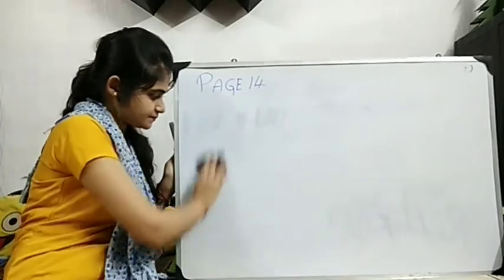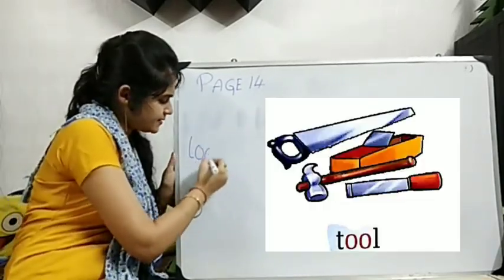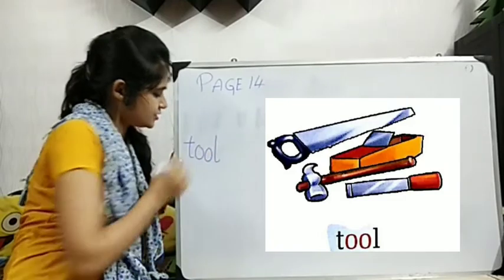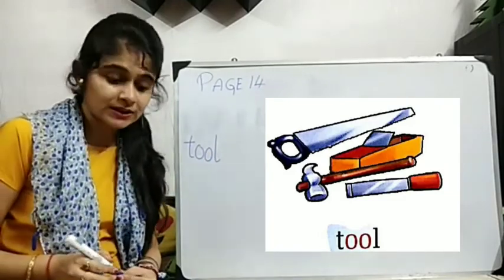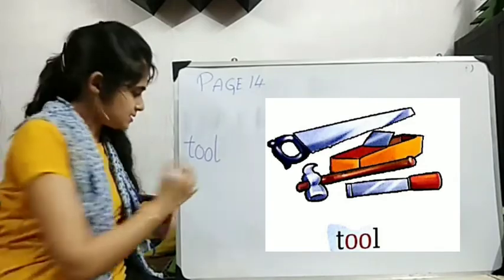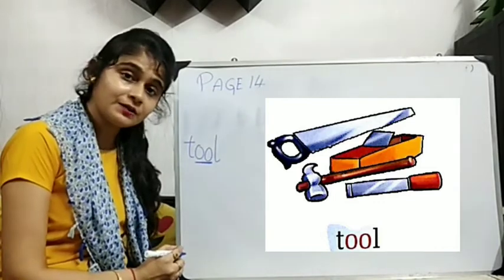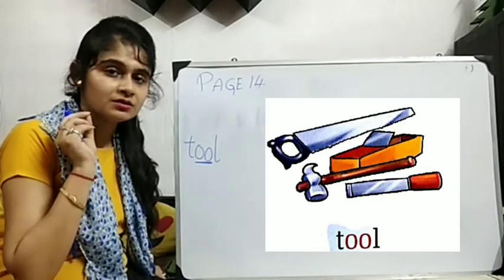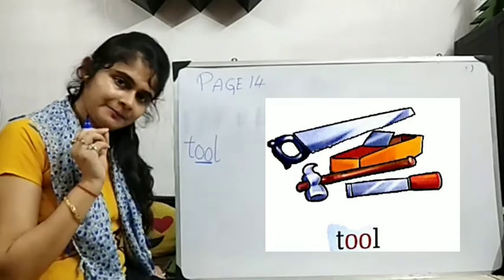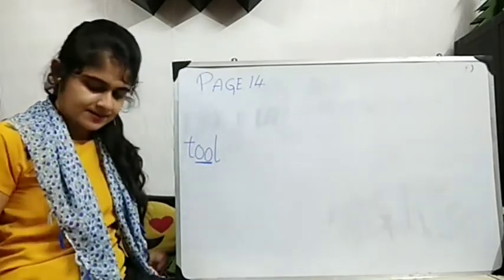Next. What is this called? So many things are kept together in the picture. It's called Tool. Now here we are doing double O. See? Double O. So when we are doing double O, what sound we are doing? O. Tool. O. Tool. Okay? T-O-O-L. Tool.